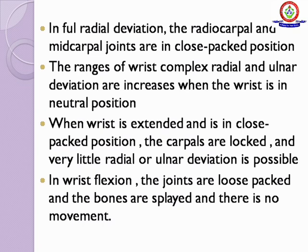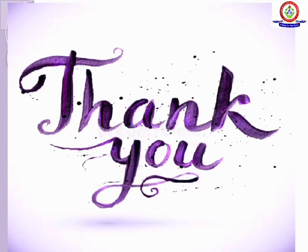The range of wrist complex radial and ulnar deviation increases when the wrist is in the neutral position. When the wrist is extended and in the closed pack position, the carpals are locked and very little radial or ulnar deviation is possible. In wrist flexion, the joints are loose packed and the bones are splayed and there is no movement. Thank you.